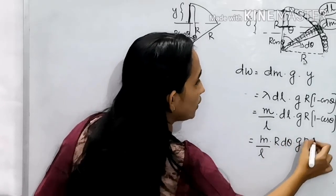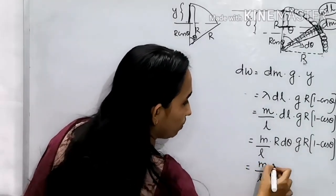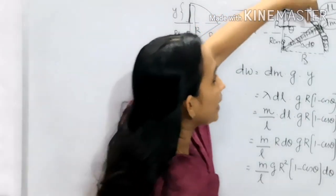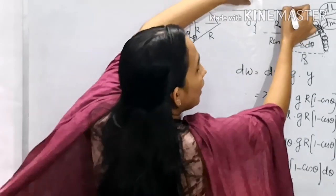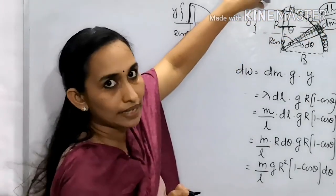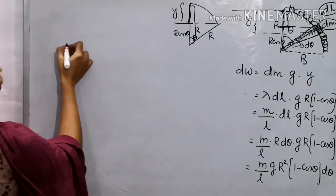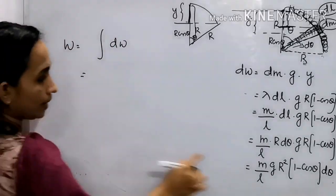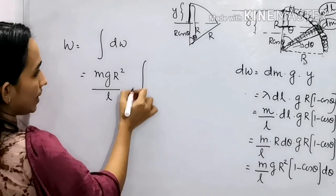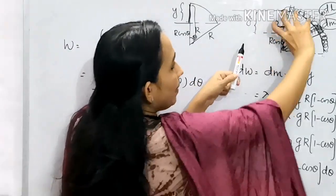Substituting, we get dW = λ·g·r²·(1 − cosθ)·dθ. This is the work done to bring element dm onto the table. So the total work done is the integral of all the small work elements: W = ∫dW = (mg·r²/l) · ∫(1 − cosθ)dθ, where these terms are constants taken outside the integral.